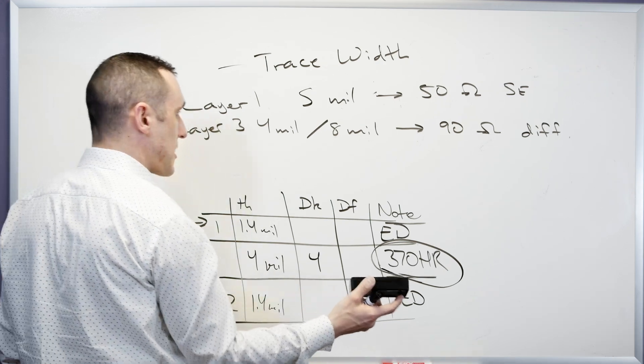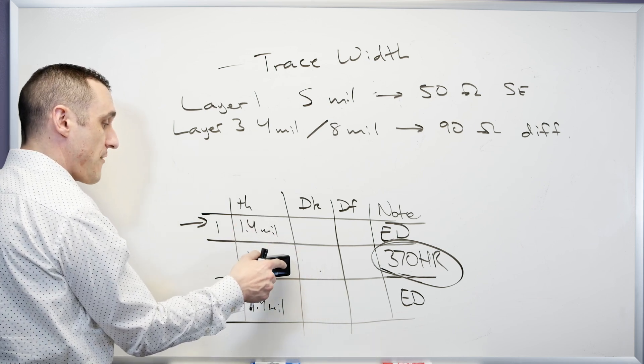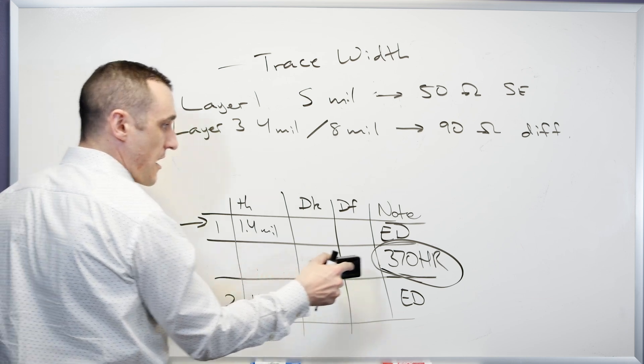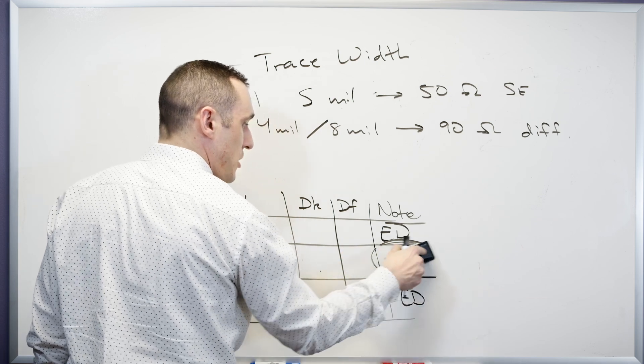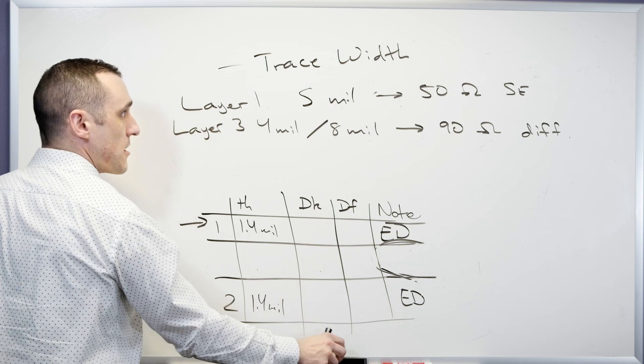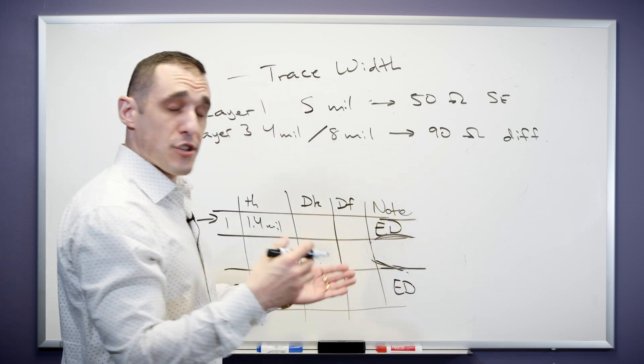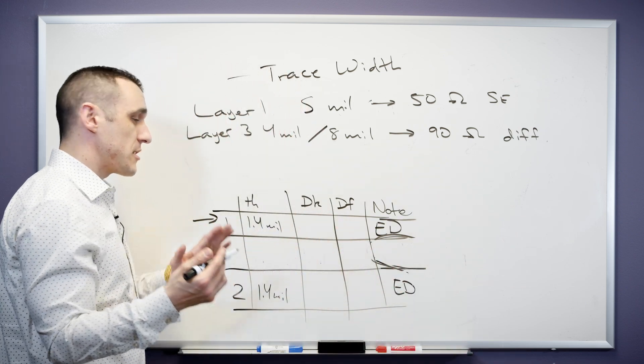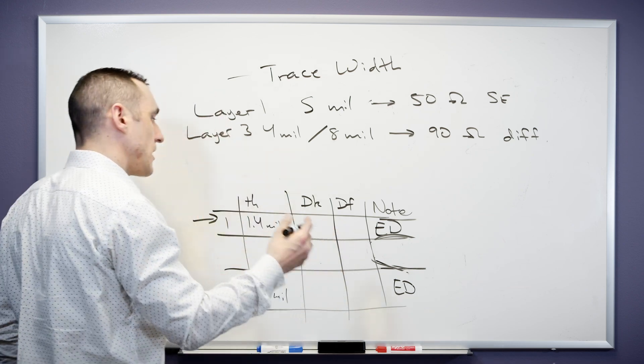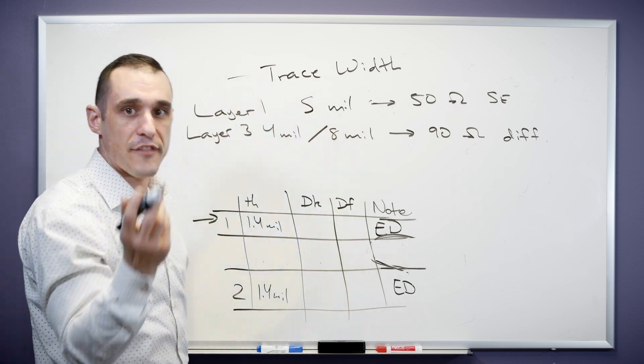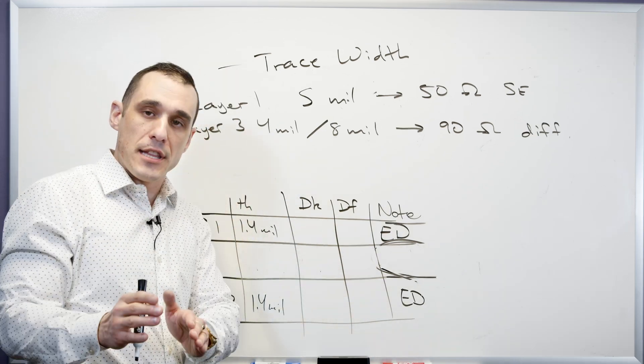And this can continue all the way throughout the stack up as we need more impedance profiles in the design. So when you're actually delivering something to your fabrication house what you're not doing is you're not specifying a DK value, you're not specifying a thickness, and you're not even specifying a product name. Instead you are actually specifying these impedance profiles that you want to hit on each layer.